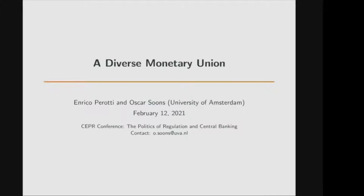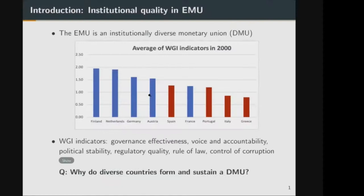Hello everyone. Thank you for the introduction, Martin, and thank you to the organizers of the conference. I'll present my work with Enrico Perotti on a diverse monetary union. I want to start with two figures that motivate this paper. The first figure shows that the European Monetary Union is an institutionally diverse monetary union, or DMU. Institutions are hard to measure. What I use here is data published by the World Bank on six indicators that proxy for aspects of institutional quality.